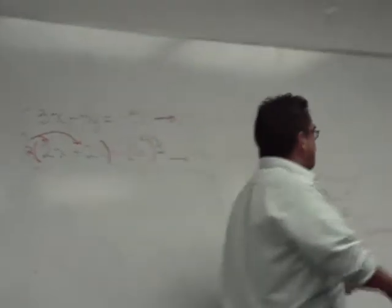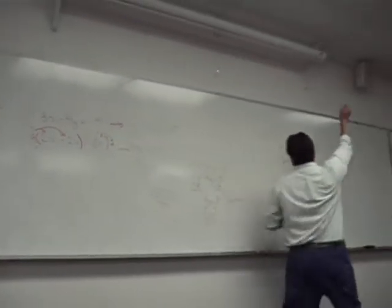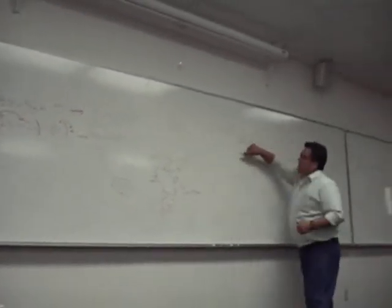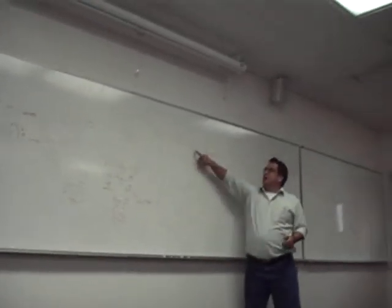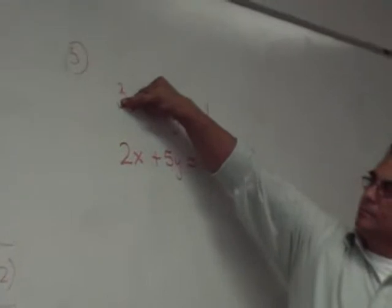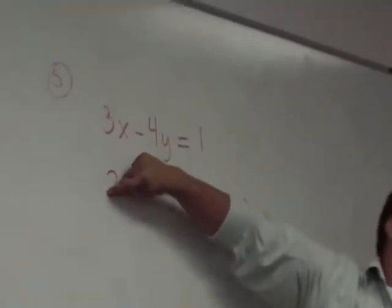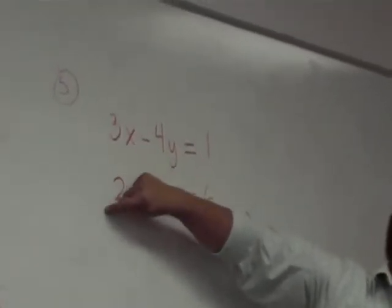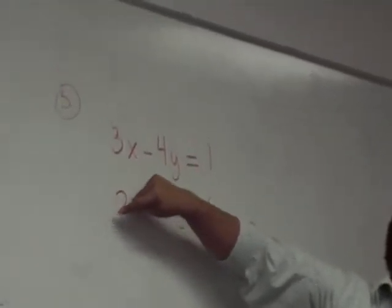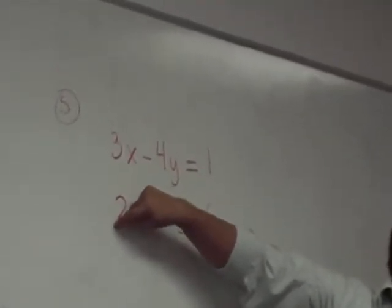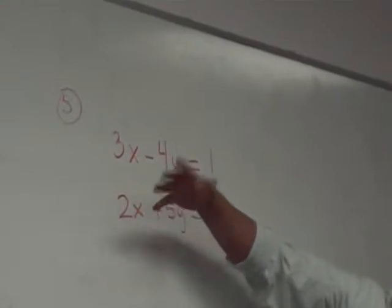What is the opposite of 3? Negative 3. Is there an easy way to multiply 2 by something to change it into a negative 3? No.